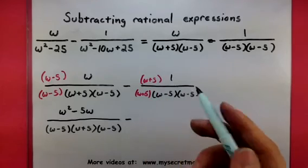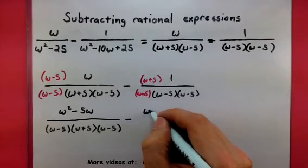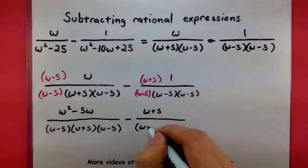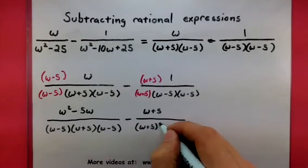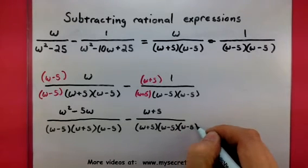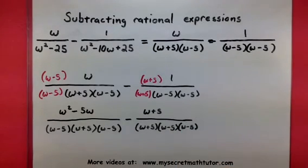Alright? What are we subtracting? Well, that times 1 is just going to be a w plus 5. Alright, it's looking pretty good. Now let's go ahead and run through that subtraction process.